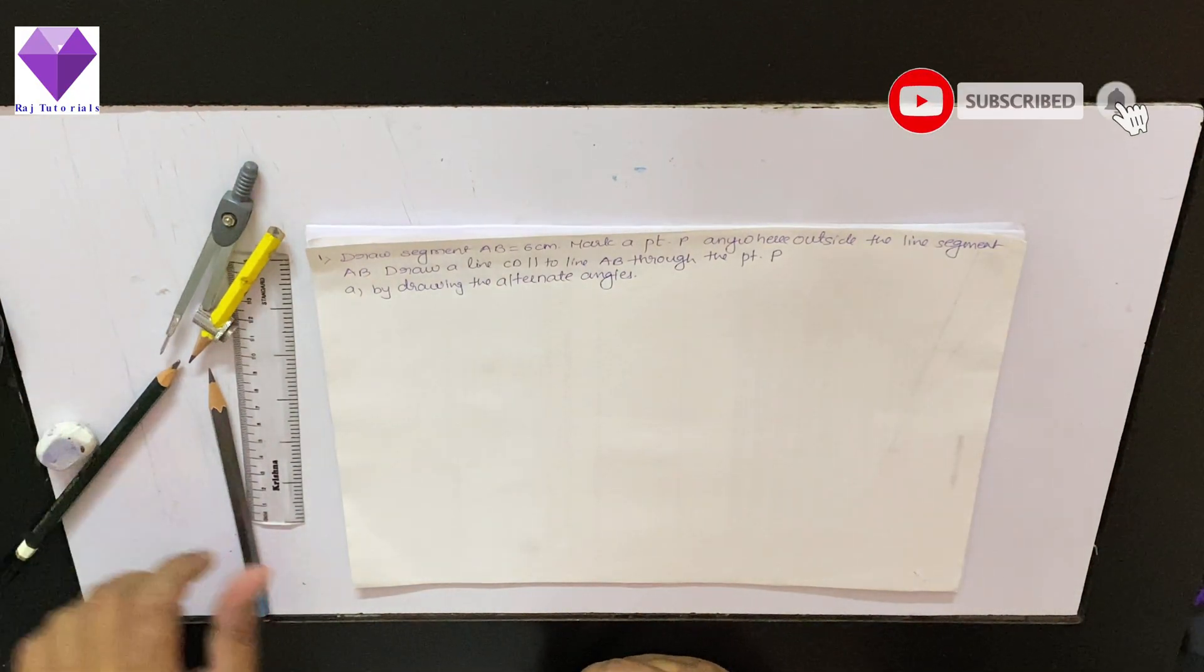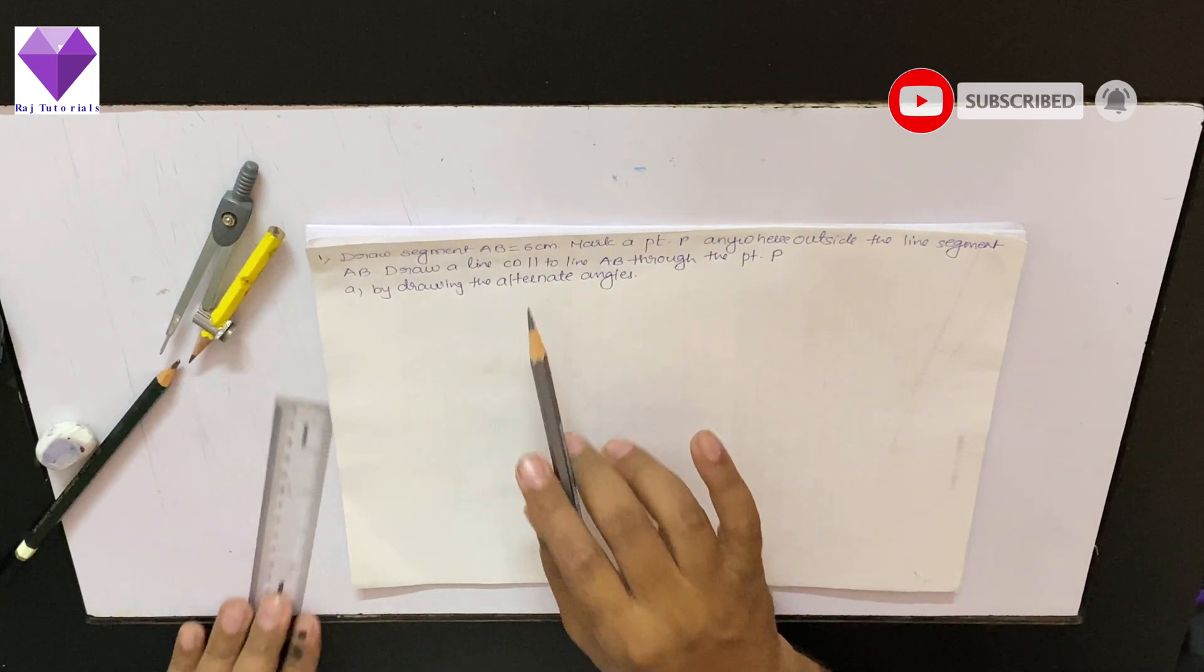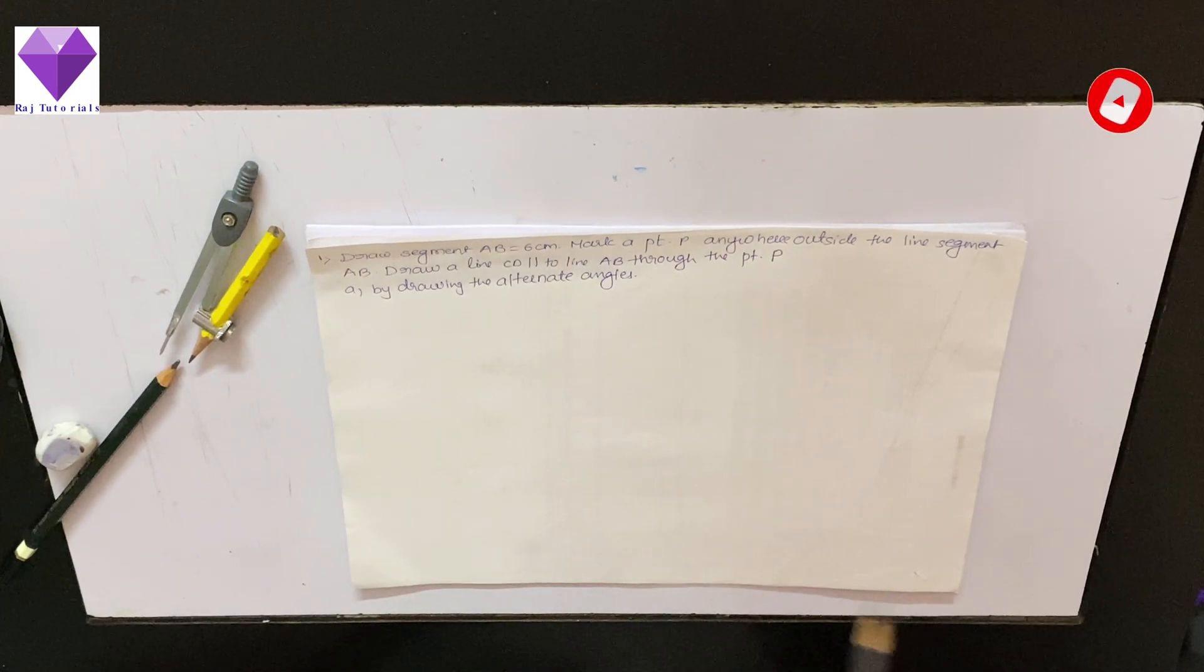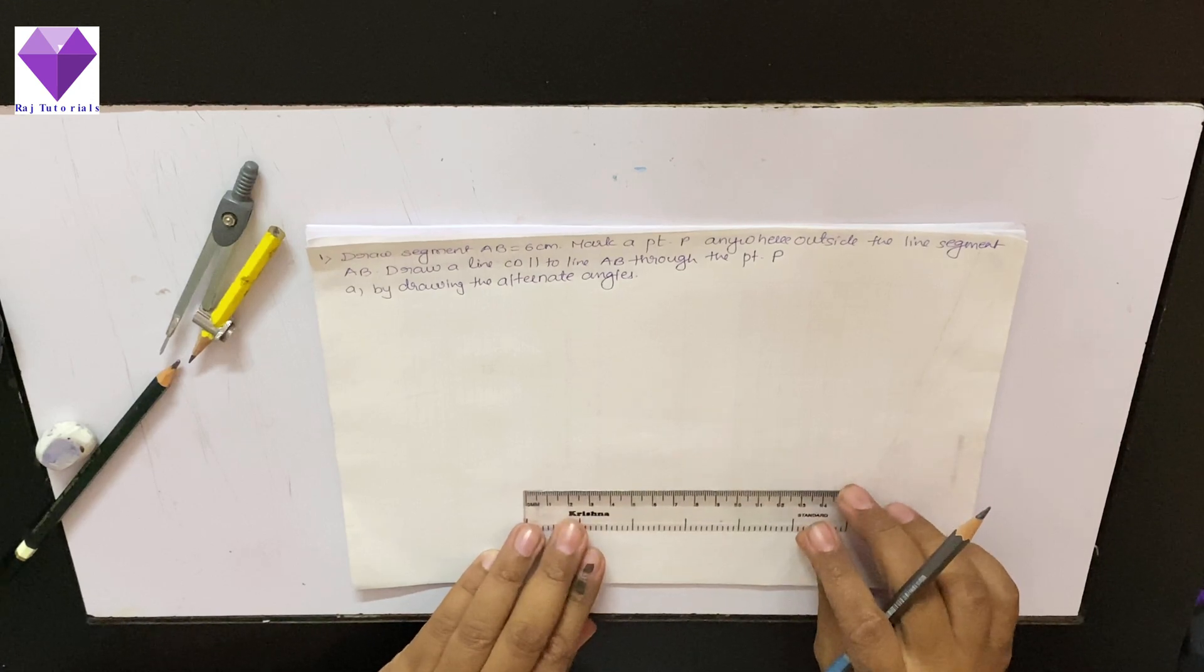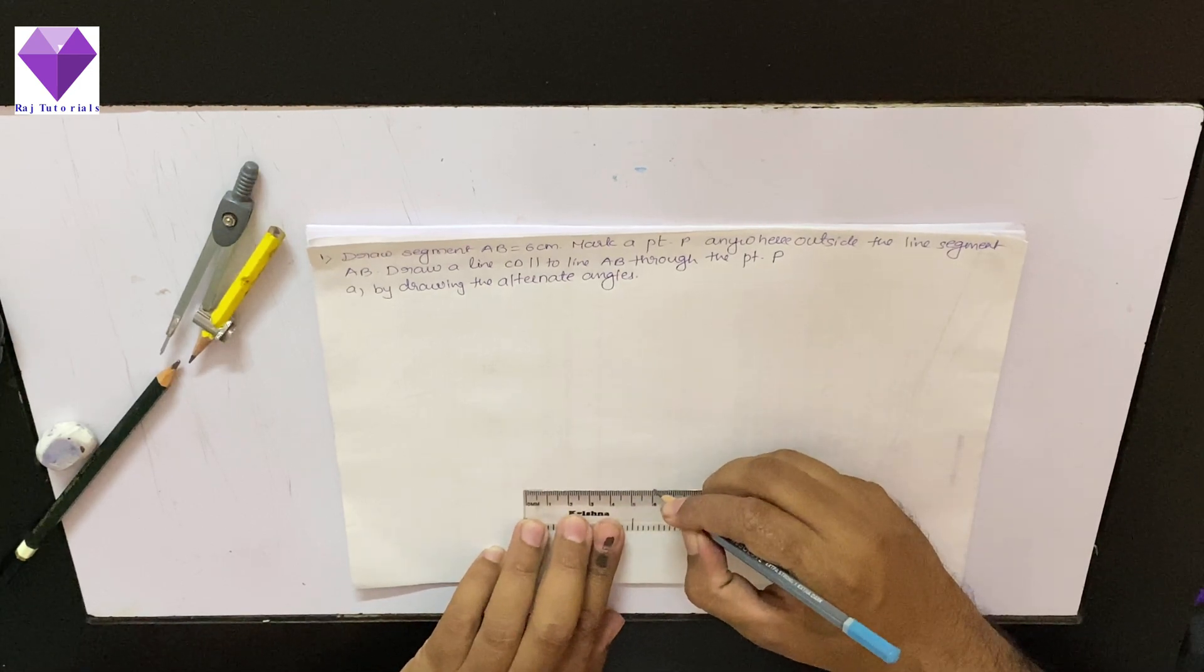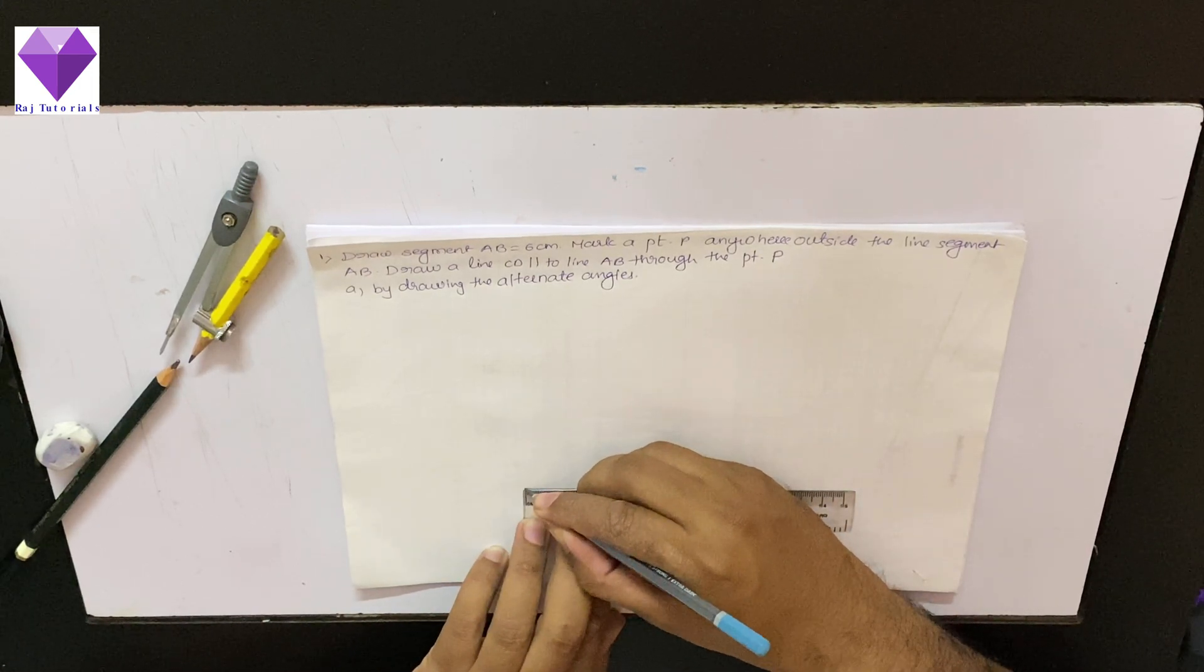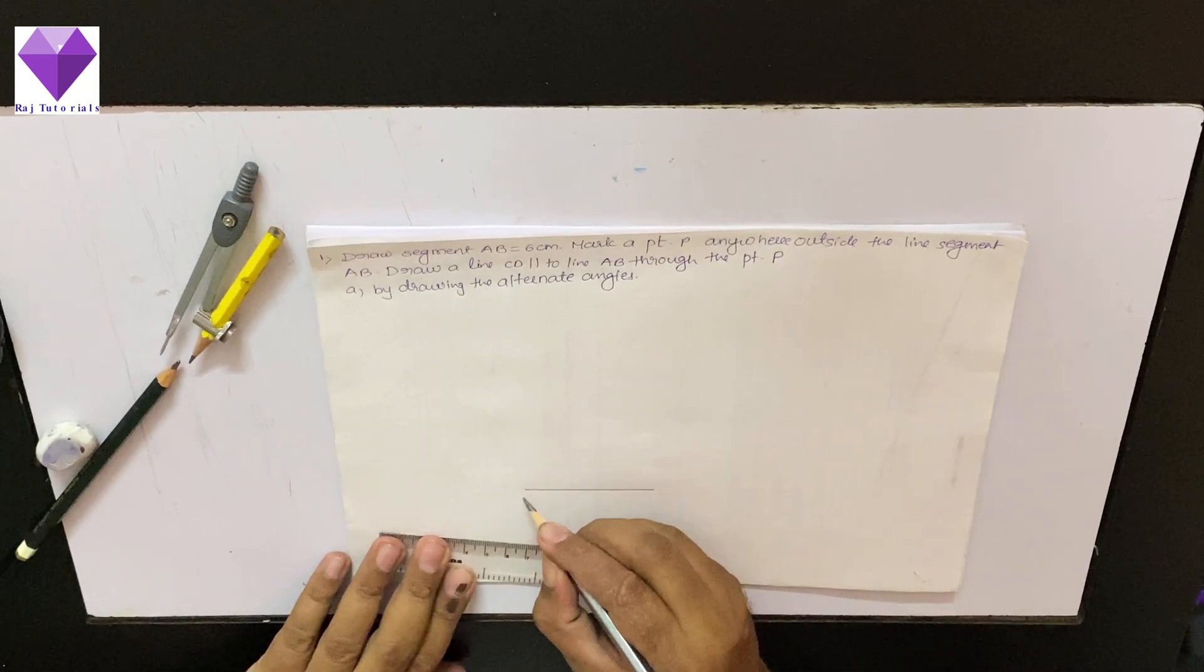Hello student, now we are going to draw a line segment AB equal to 6 centimeter. So, first of all I will draw a line segment AB of 6 centimeter, I will give it the name AB.